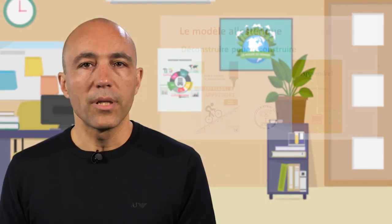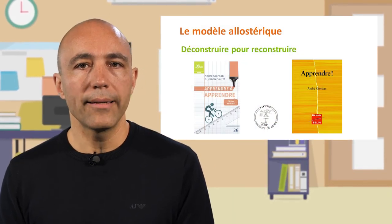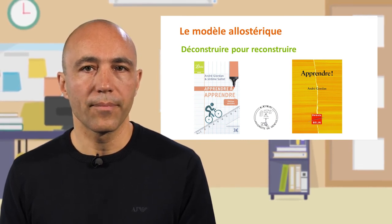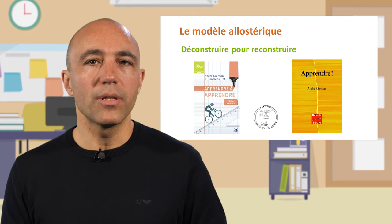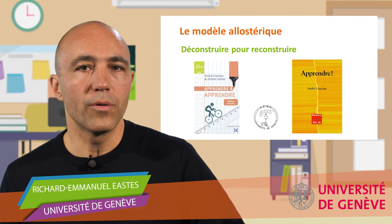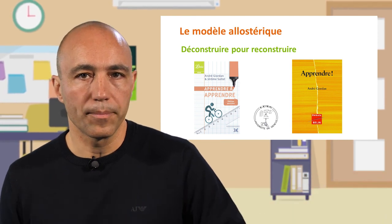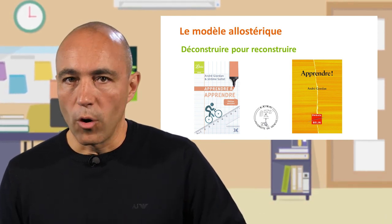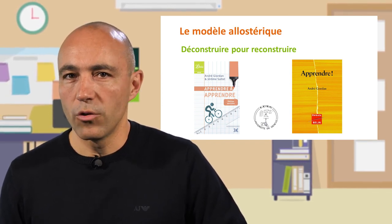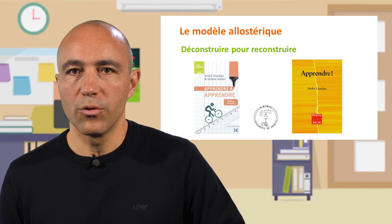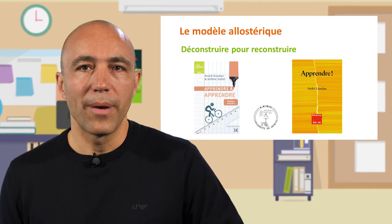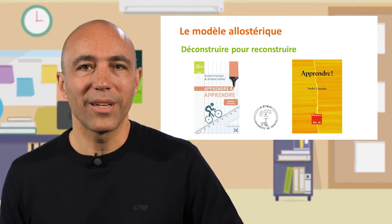Pour décrire ces cas d'apprentissage complexes, un modèle dit « allostérique » a été développé par André Giordan à l'Université de Genève durant les 30 dernières années. Il s'appuie sur l'idée que l'apprentissage procède d'une succession de transformations des savoirs déjà acquis par des processus de déconstruction-reconstruction. Pour apprendre, il faut faire avec son savoir pour aller contre lui. C'est psychologiquement difficile, affectivement pesant et cognitivement épuisant, mais indispensable pour développer une pensée complexe, par nature paradoxale et contre-intuitive.